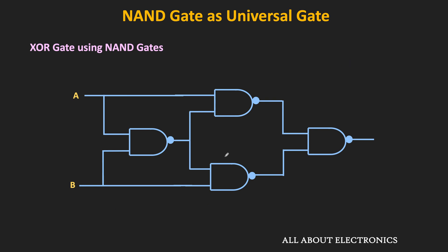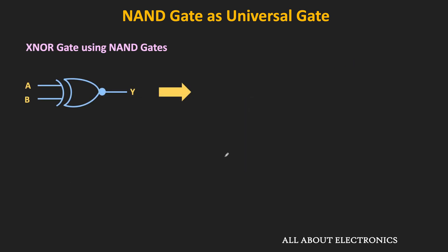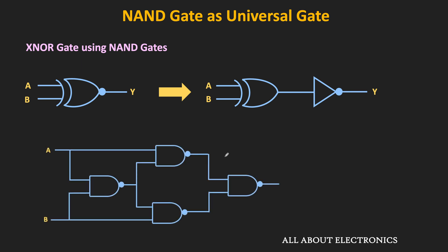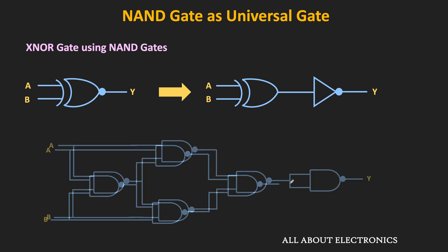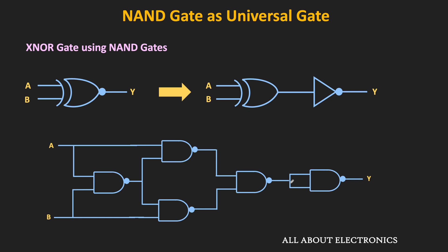Similarly, let us see how to implement the XNOR gate using the NAND gate. The XNOR gate is the XOR gate followed by an inverter, and we have already seen how to implement the XOR gate using NAND gates. So if we just connect a NAND gate (configured as inverter) at the output, then we will get the equivalent XNOR gate. In this way we can implement the XNOR gate using NAND gates, and as you can see it requires a minimum of 5 NAND gates.